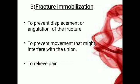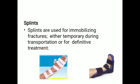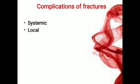Fracture immobilization is done to prevent displacement or angulation of the fracture, to prevent movement that might interfere with union, and to relieve pain. Splints are used for immobilizing fractures either temporarily during transportation or for definitive treatment.